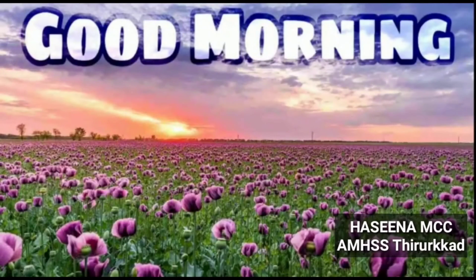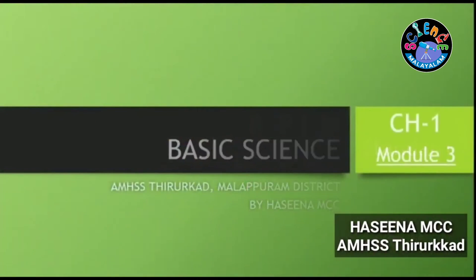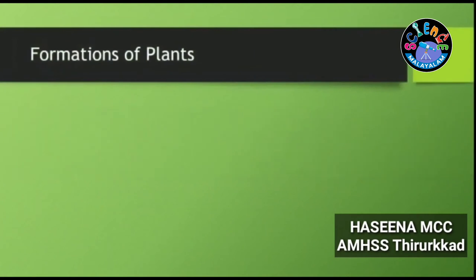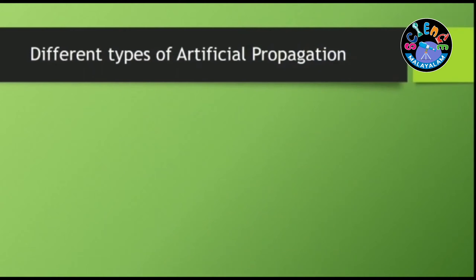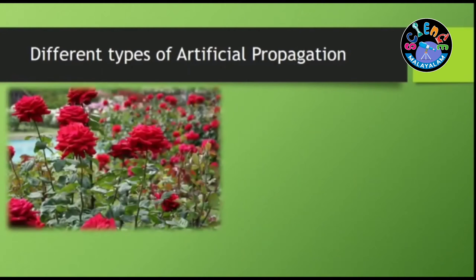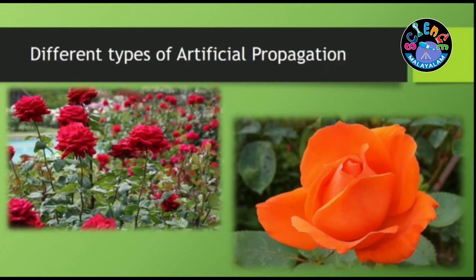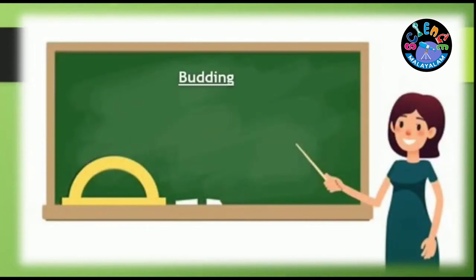Good morning, students. In the last class we studied about sexual reproduction and vegetative propagation. Today we are going to study different types of artificial propagation. In my home there is a red rose, but in my neighbor's home there is an orange rose. I wish to get that orange rose on my rose plant. For this purpose I will choose an artificial propagation, that is budding. What is budding?